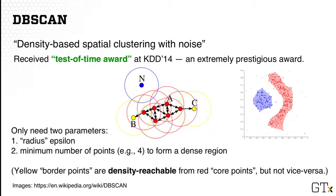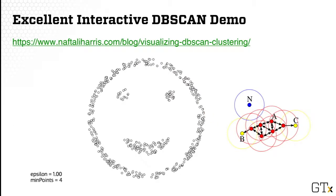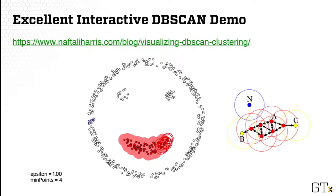The benefit of dbscan is it can find clusters of irregular shape. For example, on the right you can see one roughly circular blue cluster and an elongated red cluster. It's also able to detect outlier points — data points that are far away from the main clusters can be treated as clusters by themselves or as outliers. I highly recommend looking at an interactive demo (link shown on screen), where you can see dbscan iteratively add points to clusters, starting with one region and then starting a new cluster once all reachable points are exhausted.